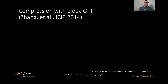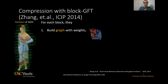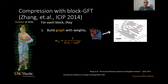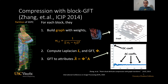This approach has been used for compression of point cloud attributes by the block GFT paper. They consider a point cloud like the one shown here, and they partition it into small blocks. For each block, you can build a graph with weights inversely proportional to the distance between the points. Then, given this graph, you can compute its Laplacian and the GFT. You can apply the GFT to the attributes, and then you obtain one low-pass coefficient and several high-pass coefficients. These coefficients are then quantized and entropy coded, and since most of the coefficients are very small, this leads to a high compression ratio.